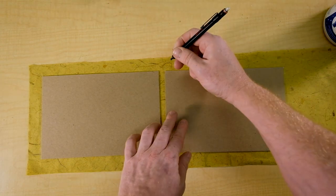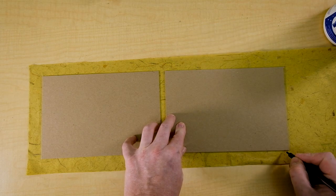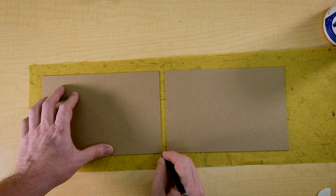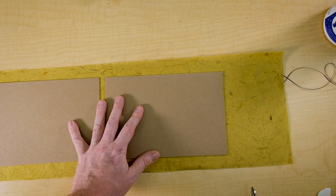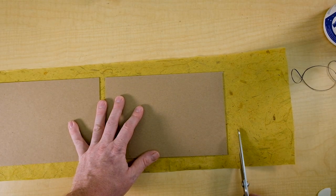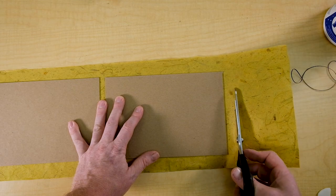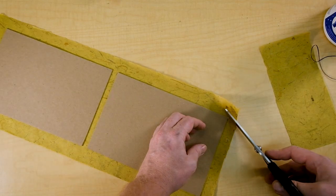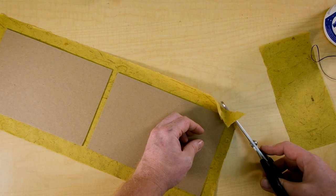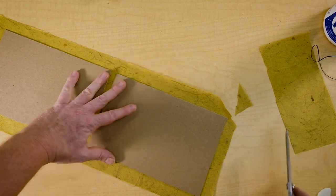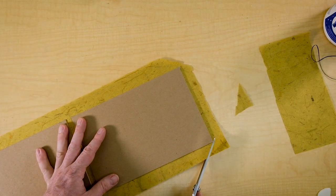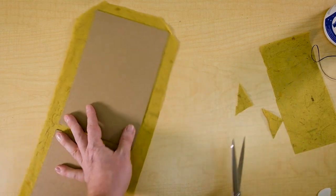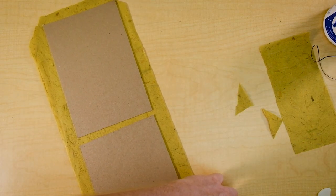I just take a pencil then and mark my corners and if I want I can go ahead and trim off the extra now. A little bit easier now than when there's glue on it. The other thing I can do is miter these corners. I just go to a corner and I cut off the excess at a 45. We're going to be wrapping these edges over and that will help keep the excess paper out of the way.